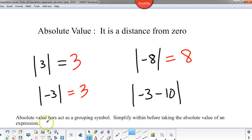But the absolute value does act as a grouping symbol. So we're going to simplify within. This really becomes the absolute value of negative thirteen. So within the absolute value bars, we simplify and then we take the absolute value of negative thirteen. We evaluate that to be thirteen.